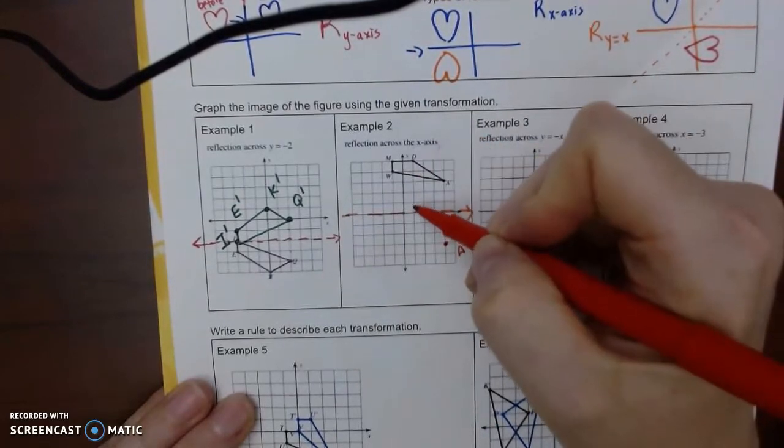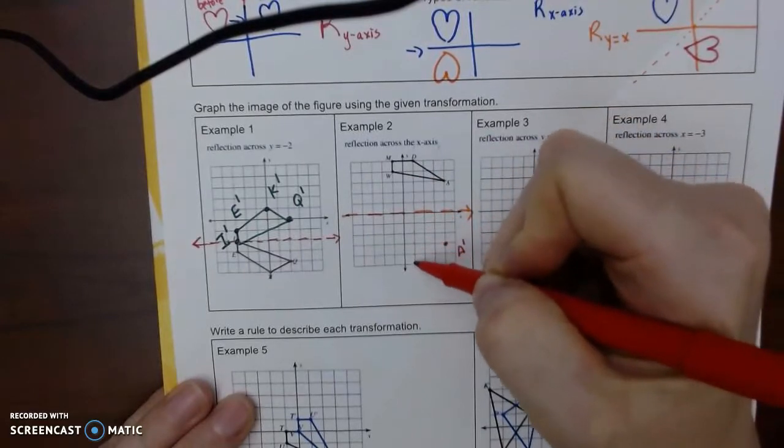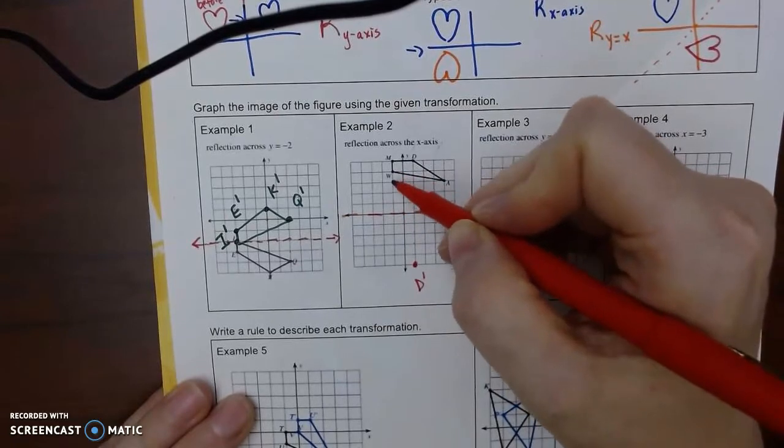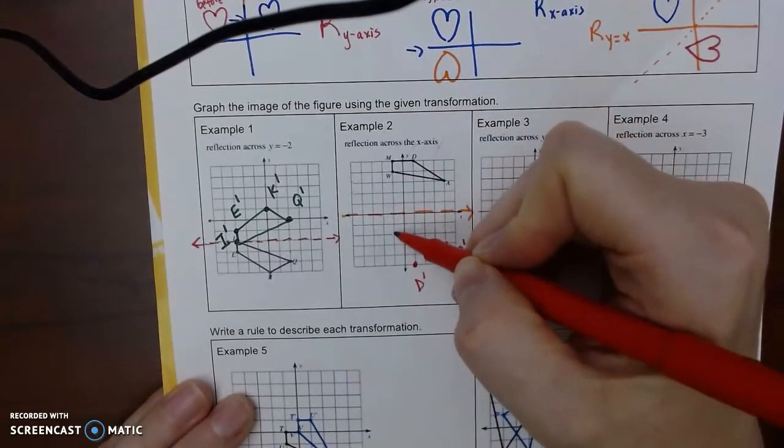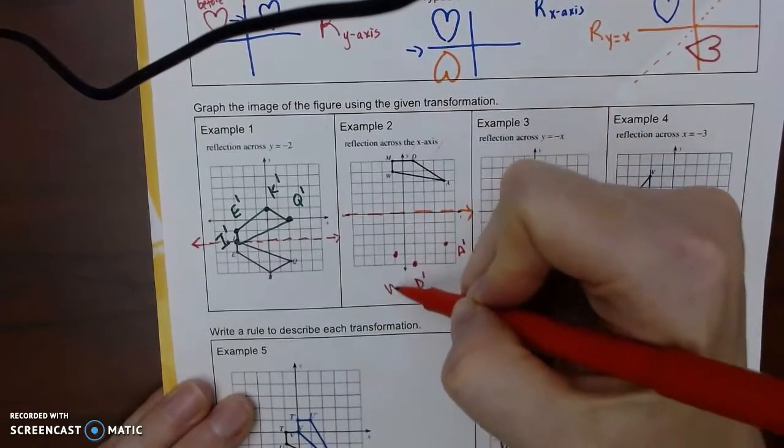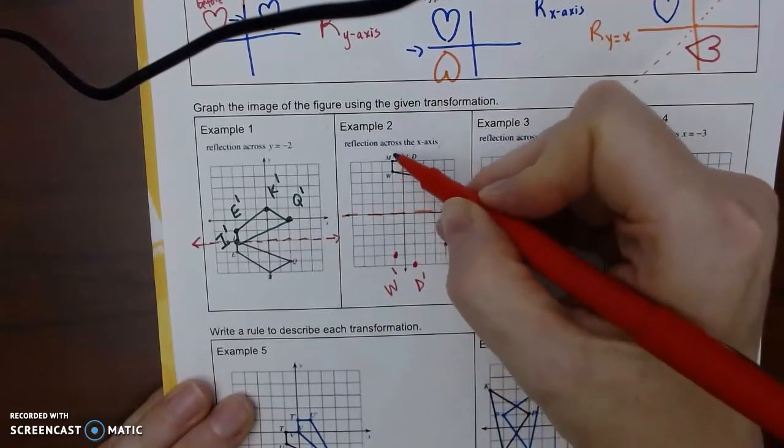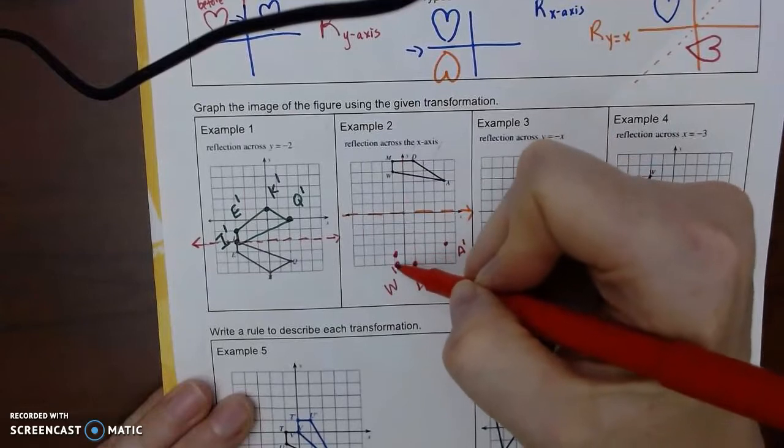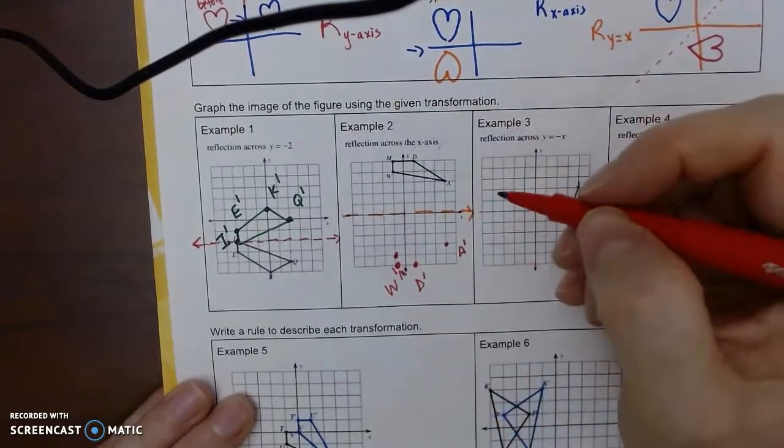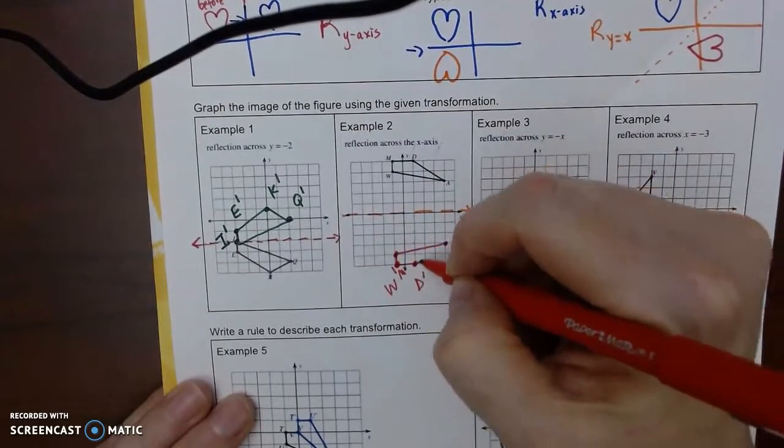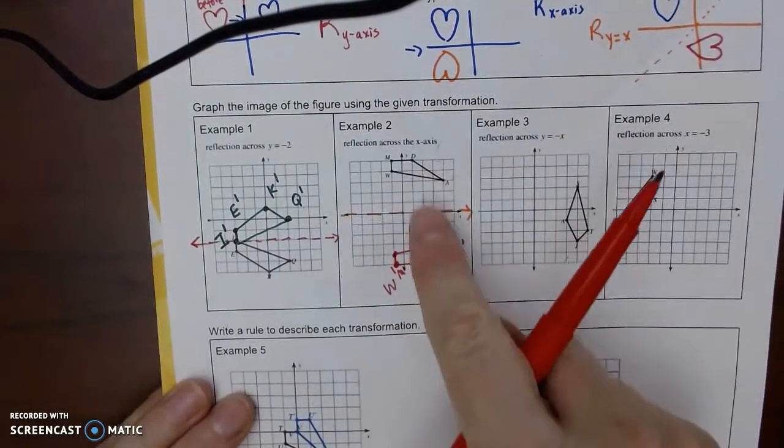D we went one, two, three, four, five, so one, two, three, four, five. W, four, four, one, and then M is five. Kind of squeeze it in, so I'm just going to connect, and they should look like they're mirror images. Like that's the mirror.